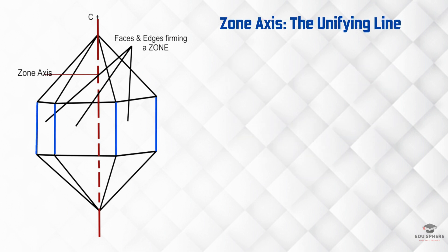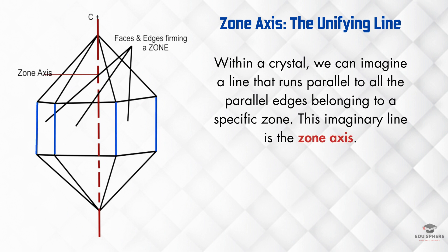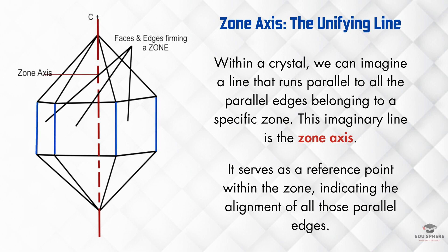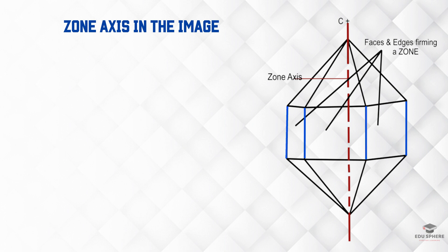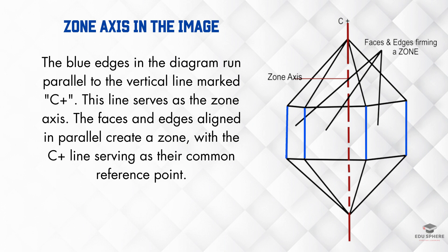Now that we understand zones, let's introduce the concept of a zone axis. Within a crystal, we can imagine a line that runs parallel to all the parallel edges belonging to a specific zone. This imaginary line is the zone axis — it acts as a reference point for the zone, representing the direction of all those parallel edges. In our quartz crystal example, the blue edges are all parallel to the vertical line labeled c-plus, which represents the zone axis in this case.